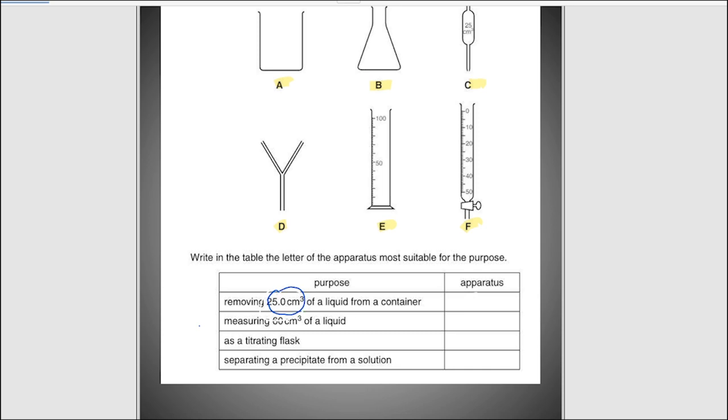Here is the exact measurement will be of burette, it will be F. Measuring cylinder basically will be used for measuring 60 centimeter cube of a liquid, so E will be used for this measuring cylinder. As a titrating flask is B. Separating precipitate from a solution is filtering funnel that is D.